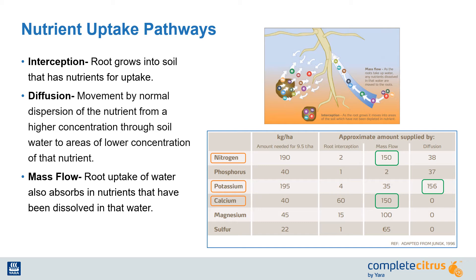Root interception occurs when plant roots grow into an area of soil that contains nutrients. Diffusion is the movement of nutrients from an area of higher concentration through soil water to areas of lower concentration. Phosphorus and potassium especially move this way. Mass flow occurs when roots absorb water and there are nutrients that are dissolved and make up a content of that absorbed water. Nitrogen and calcium move via mass flow in the largest amounts.